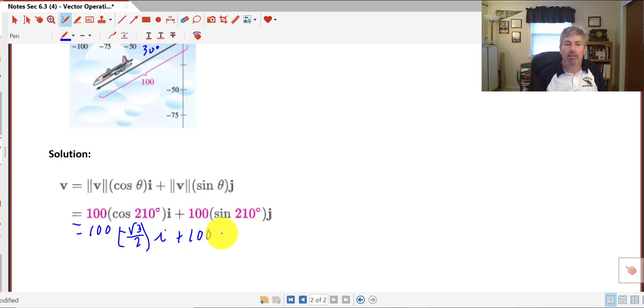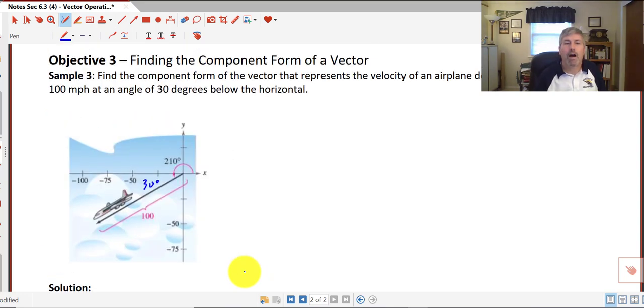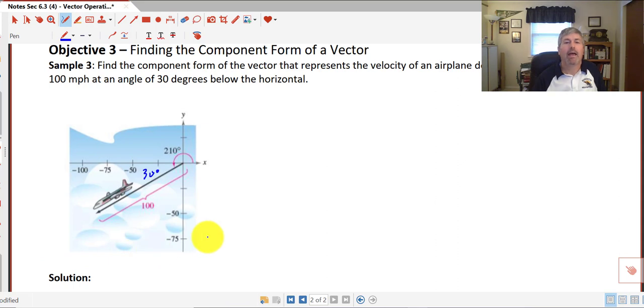And then the sine there is negative one half j. So we get negative 50 square root of 3 i minus 50 j. So our new vector is negative 50 square root of 3 and negative 50. So we have found the component form of the vector that represents the velocity v of the airplane descending at that particular speed.